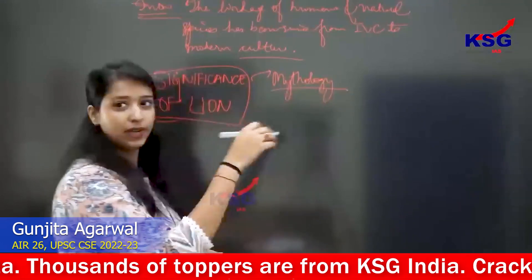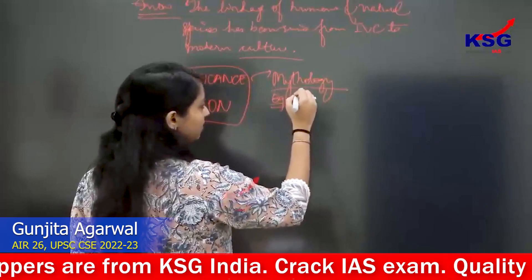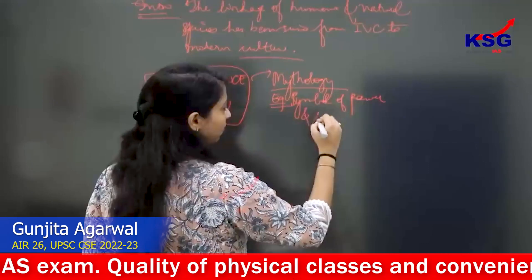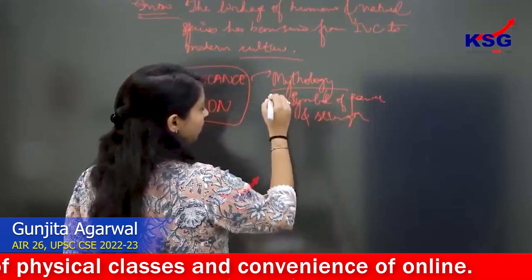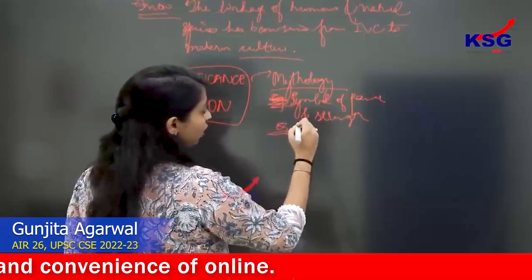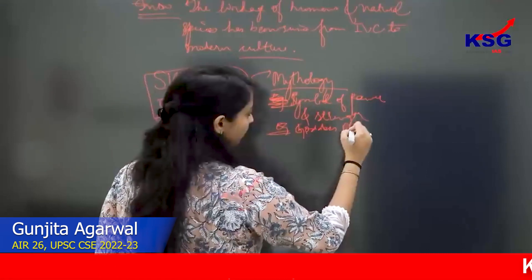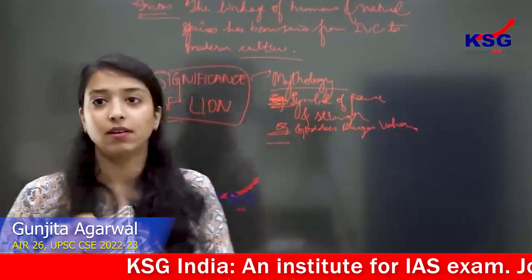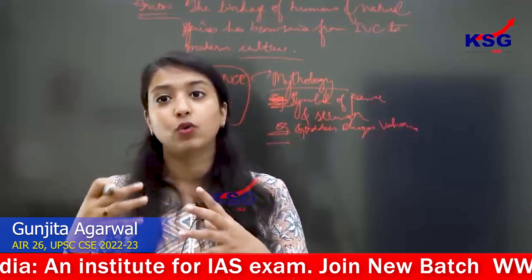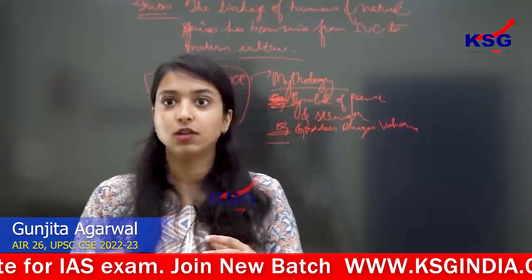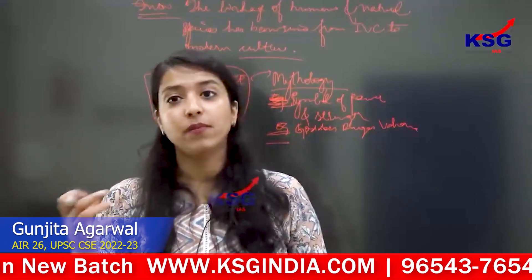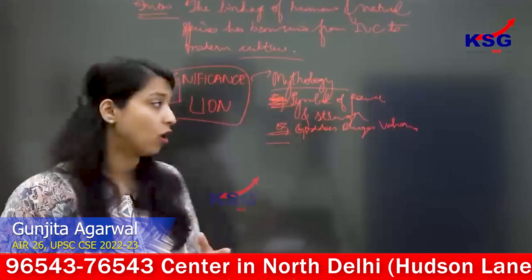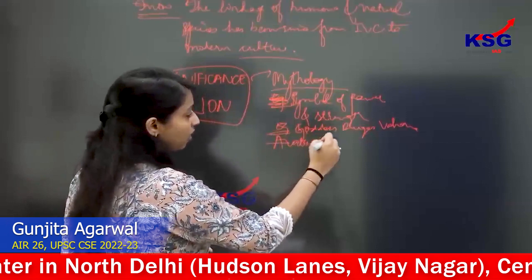We will write the significance of the lion, subdivided into mythology, art, and architecture. In mythology, you will write basic information — for example, the lion is a symbol of power and strength. Then you give an example: Goddess Durga's vahana. Similarly, in Indian mythology, lions are considered the Narsimha avatar — half god and half lion — which is an avatar of the god.